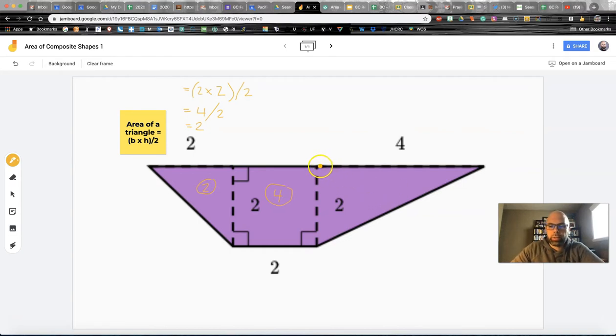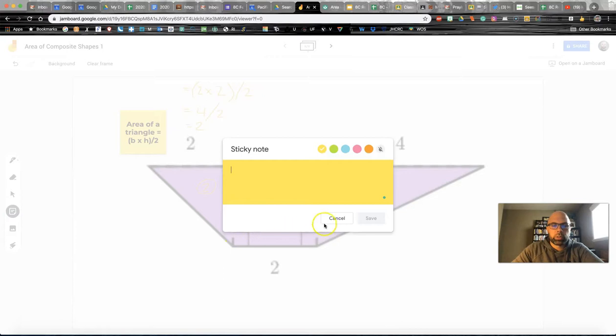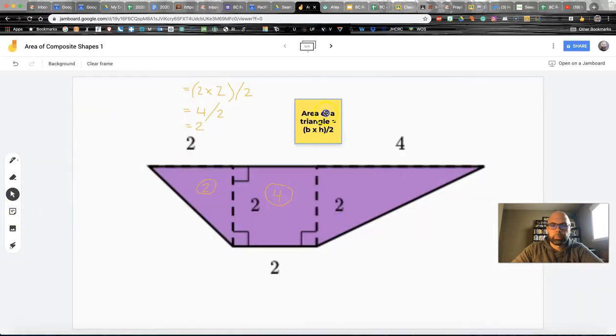And now we've got, for this lovely triangle, we've got a base of four and a height of two. So let's use the same formula. We're going to use this formula here, right? Keep it in mind. Okay.